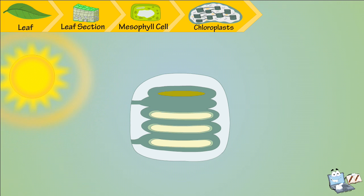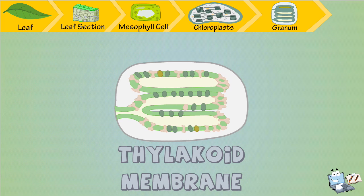it's stored in stacks called grana, in which is a thylakoid membrane. In these membranes, the chemical reaction of photosynthesis takes place.